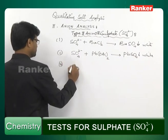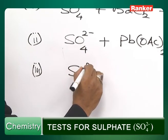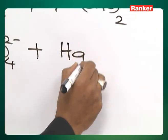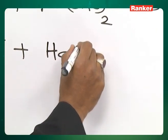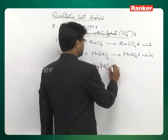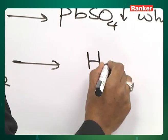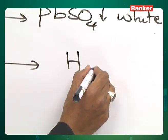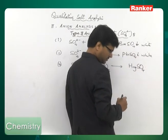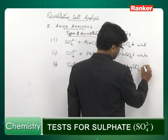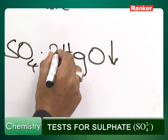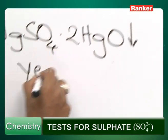One more reaction: sulphate solution is made to react with mercuric nitrate. You get a yellow precipitate of HgSO₄·2HgO. This is a yellow precipitate.